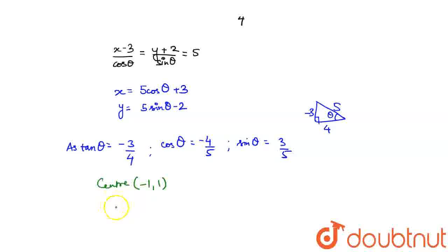So hence the required equation of the circle is, how do we give the equation of circle? It is given by x minus h whole square plus y minus k whole square is equal to r square, where h and k are the center coordinates and r is the radius, correct.